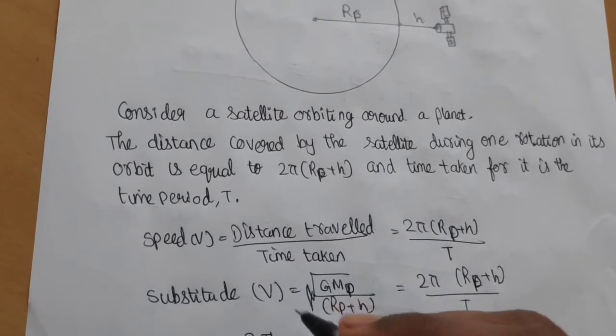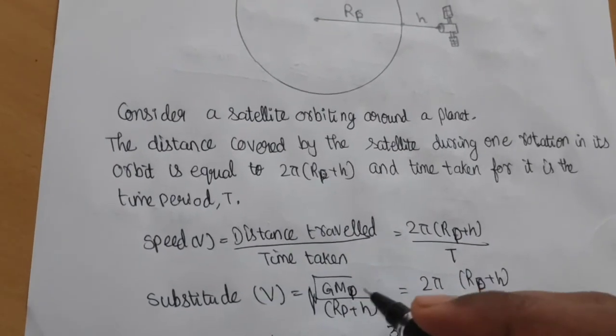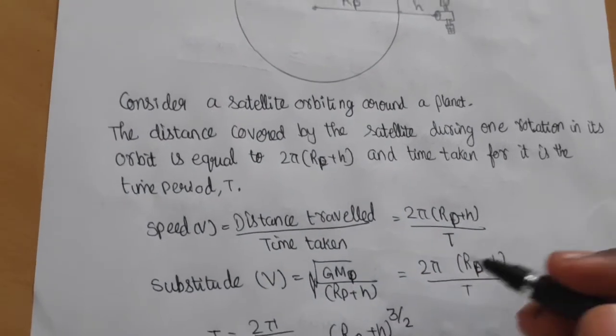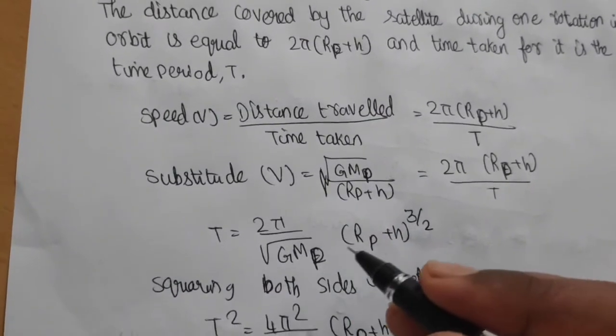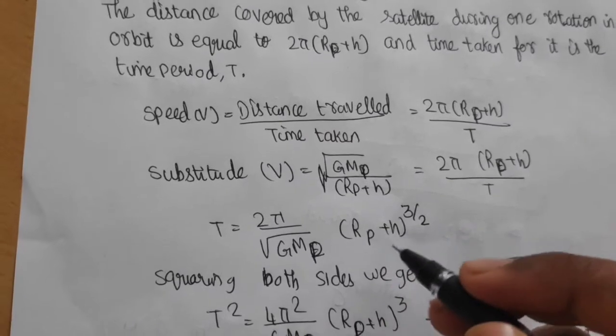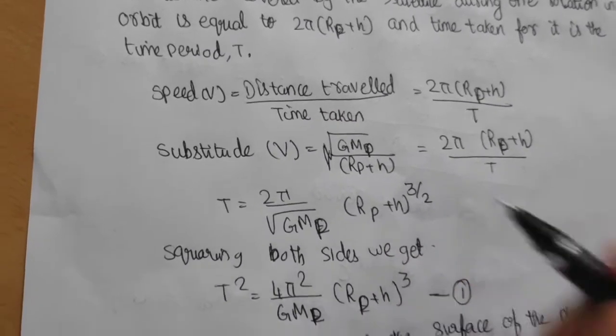v = √(GMp/(Rp+h)) = 2π(Rp+h)/T, we get T = 2π√((Rp+h)³/GMp). By squaring both sides,